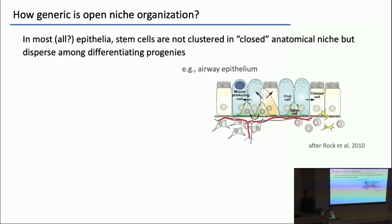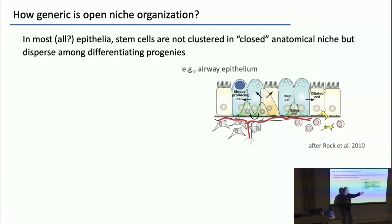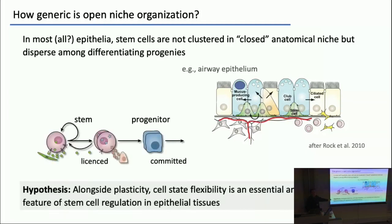How generic is an open niche? Honestly, I think it's completely generic. Here, for example, is the trachea: stem cell function is invested in these little pyramidal-like basal cells that anchor to the basal membrane, giving rise to secretory club cells and ciliated cells. Those cells are typically far separated from their neighbours, yet this is a system where you have exactly that kind of stochastic loss and locally balanced replacement. My hypothesis is that alongside cell state plasticity, this kind of quorum sensing mechanism is how you regulate stable stem cell density and homeostasis in all of these kinds of tissue types.